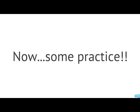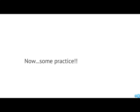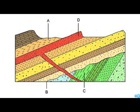Now, some practice. Place these letters in the proper order from oldest to youngest — pause this now. You've determined that C was probably the oldest, followed by B, which represents this angular unconformity here, followed then by D, most likely, because A was probably put on top of D. D is probably a lava flow.